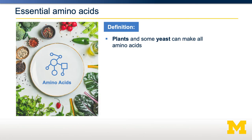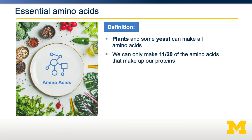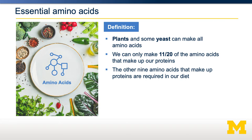The next class of essential nutrients are amino acids. Plants and yeast can make all 20 amino acids that go into protein, but humans and most mammals can only make 11 of those 20. That means nine of those amino acids are required in our diet.